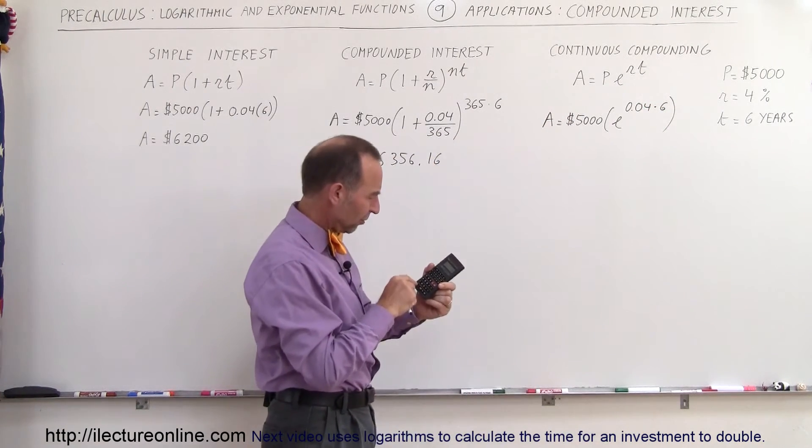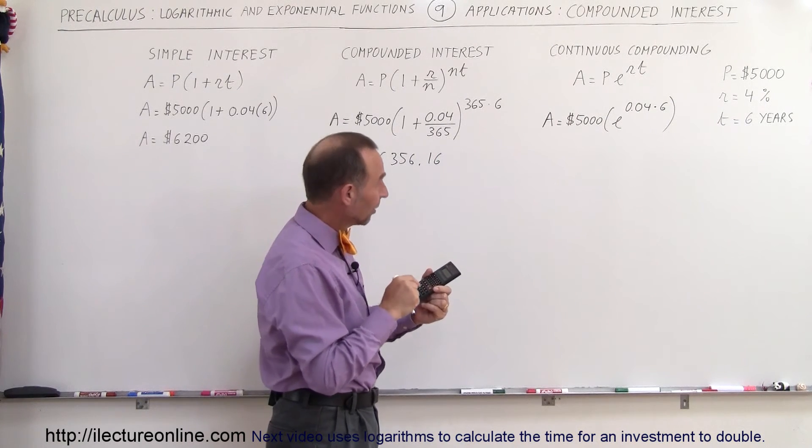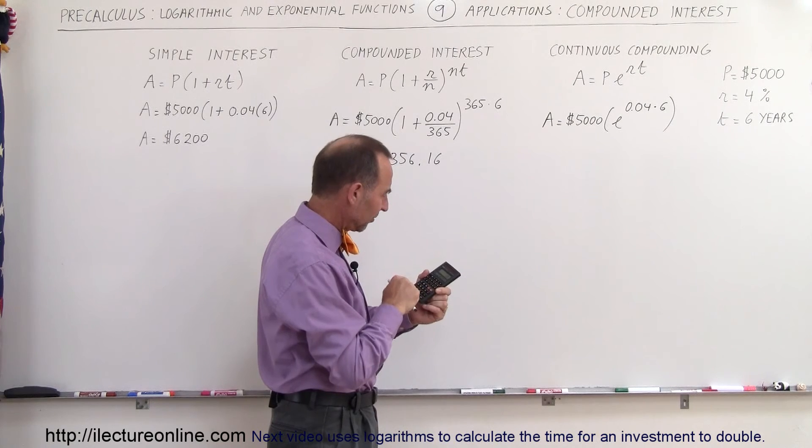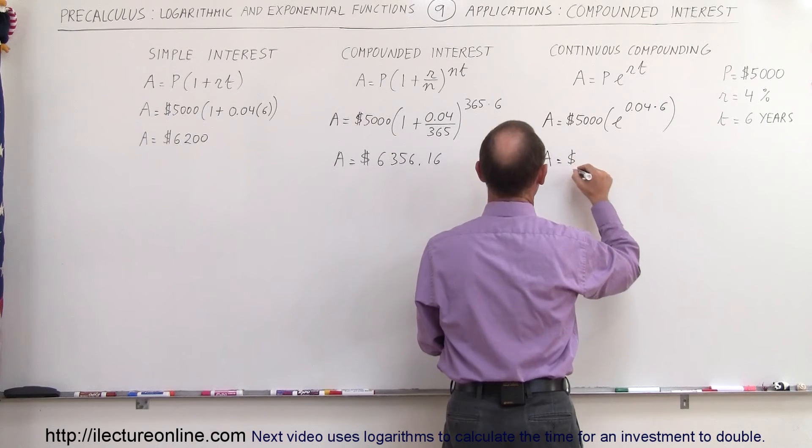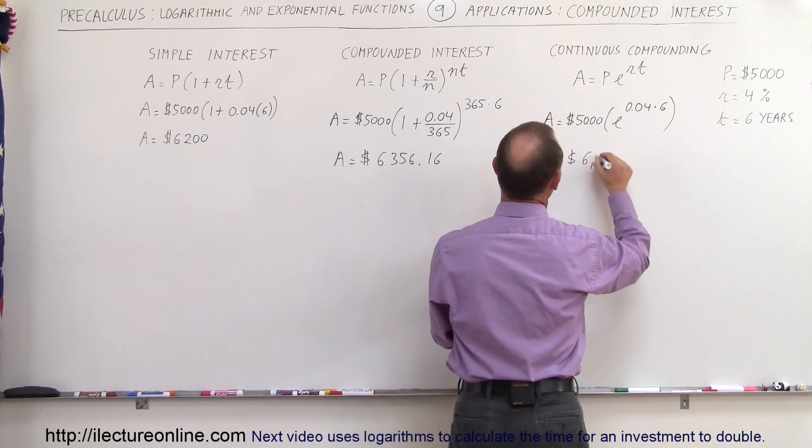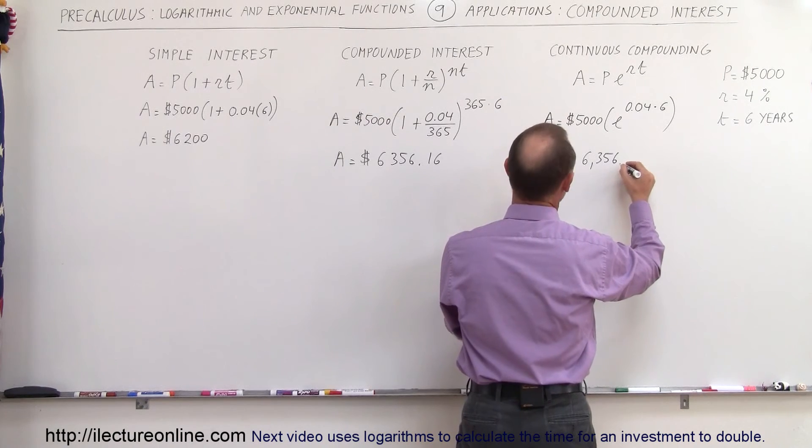So we go 0.04 times 6, that becomes the exponent, and then we multiply it times 5,000, and then the amount that you end up with is equal to $6,356.25.